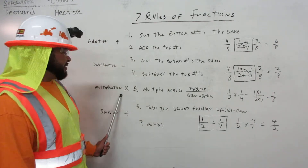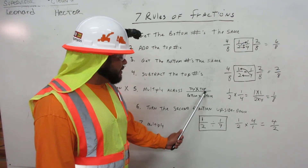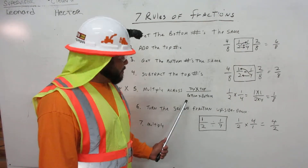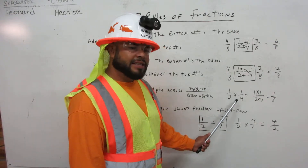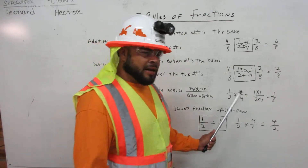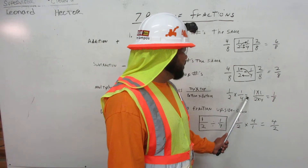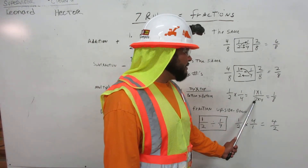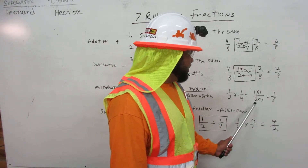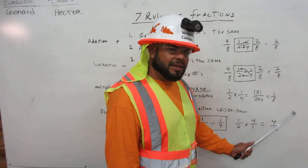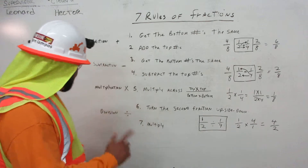Now we have multiplication. You multiply across: top times top over bottom times bottom. For example, we have one half times one quarter. So now we have one times one over two times four. One times one equals one, and two times four equals eight. And that's how we do all the multiplication on fractions.